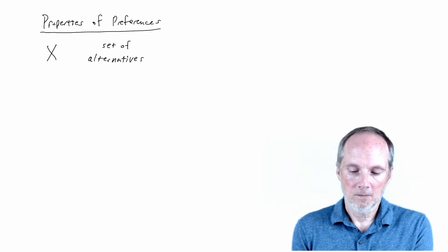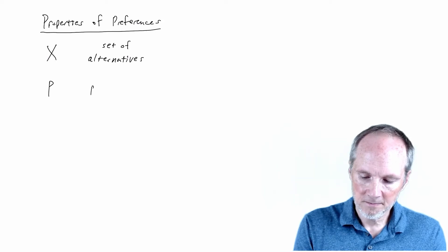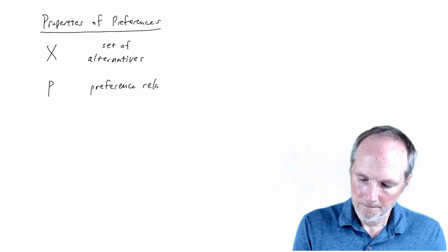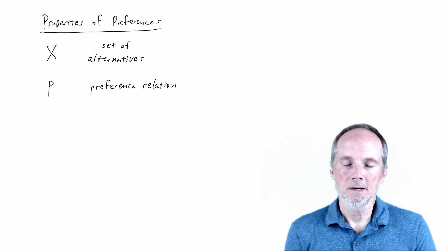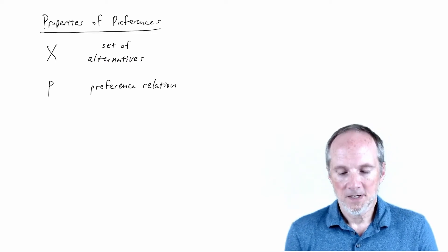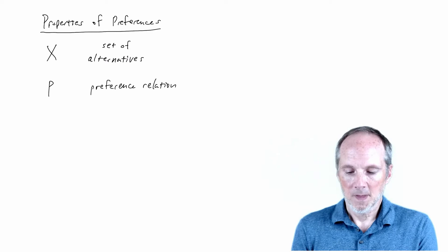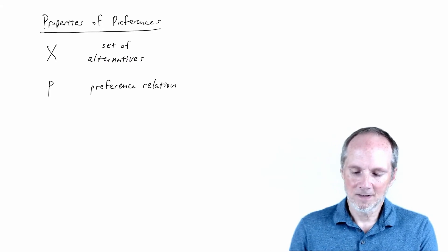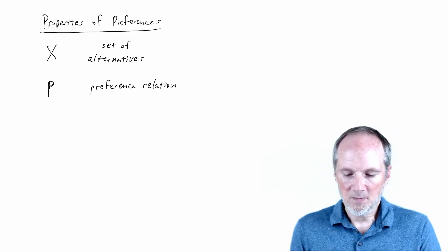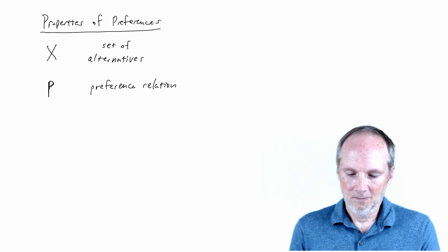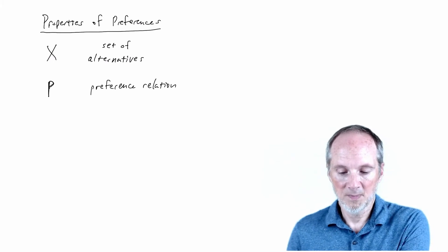So one of the first building blocks is the set of alternatives. The second building block is a preference relation, capital P. This is going to represent what I call strict preference. Formally speaking, this is a binary relation on the set of alternatives. But you can just think of it intuitively as a list of preferences. The point is that it's the second building block of the model, and obviously you need this to think about rational choice — that is, choice directed toward obtaining the best possible outcome.